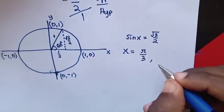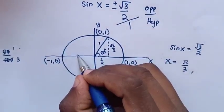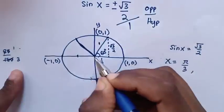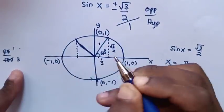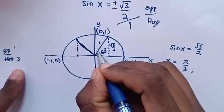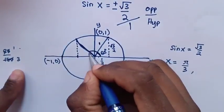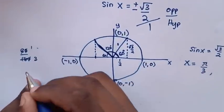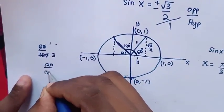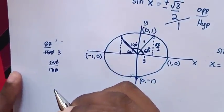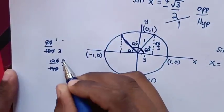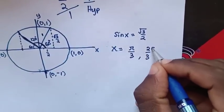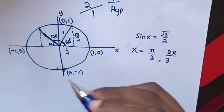The other value of x when sin x is positive: we draw a right-angled triangle from 0 to 120 degrees, where the remaining angle is 60 degrees, giving 120 degrees. Converting 120 degrees to radians: 120 divided by 180 times pi simplifies to 2 over 3 times pi, which is 2 pi over 3. So the values of x when sin x is positive are pi over 3 and 2 pi over 3.